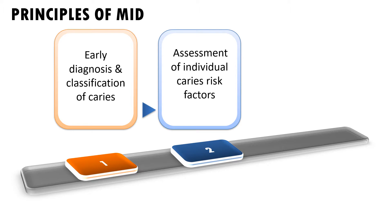The second principle is assessment of individual caries risk factors. By observing the influence of various factors, an individual can be categorized into low, moderate, or high risk groups. These factors include socioeconomic status, sugar intake, fluoride influence, and habits like between-meal snacking — all of which help us assess and categorize the patient.